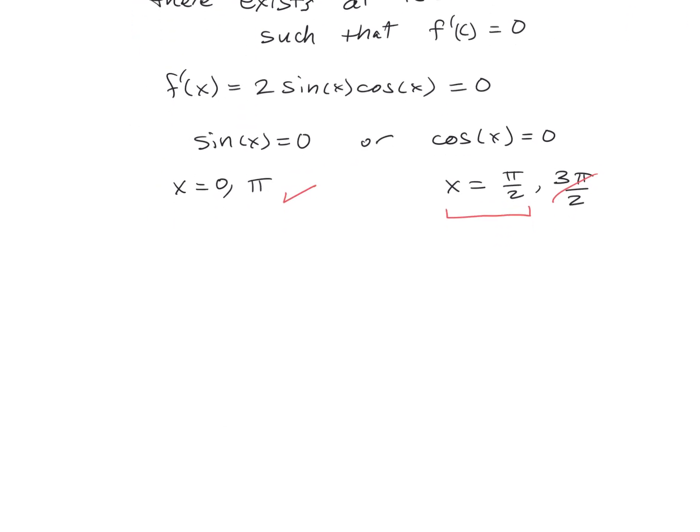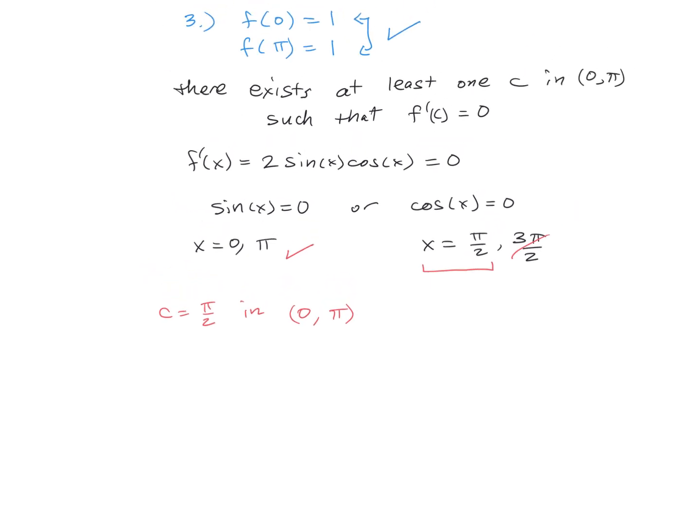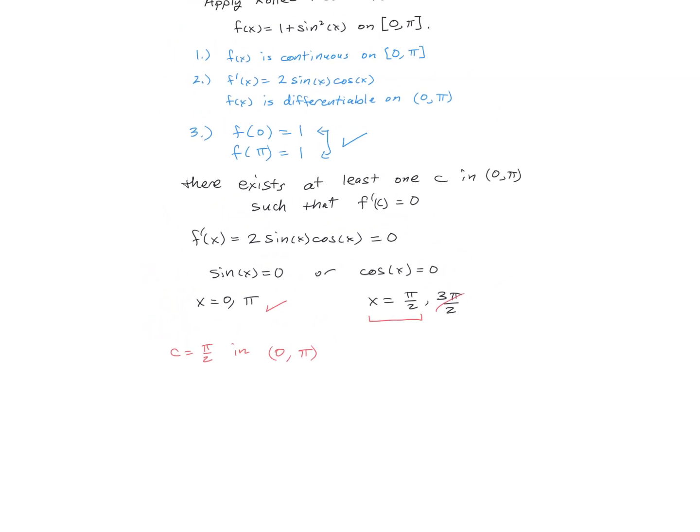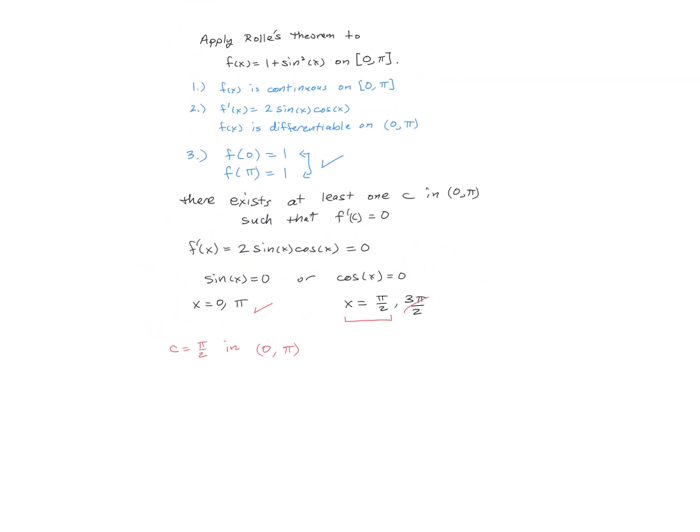So, therefore, we know that c equals pi over 2, which is in the interval from 0 to pi, is the number c guaranteed to exist by Rolle's theorem. That's the number that we have a horizontal tangent line for our function.